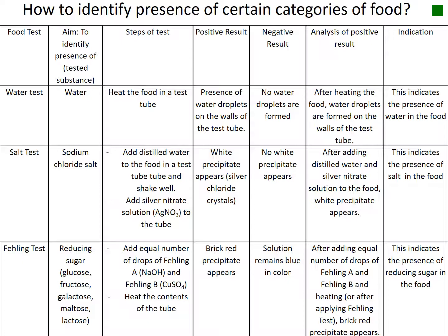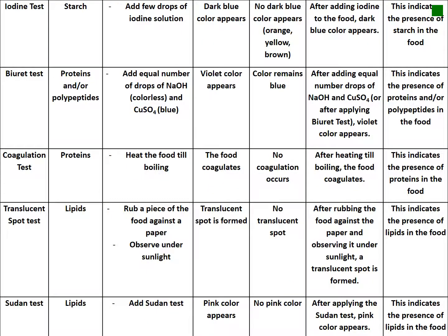For the salt test, add silver nitrate (AgNO₃); a white precipitate means salt is present, no white precipitate is a negative result. The Fehling's test identifies reducing sugars — glucose, fructose, galactose, maltose, and lactose. Add equal amounts of Fehling's A and Fehling's B; a brick-red precipitate means reducing sugar is present, the solution remaining blue means it is absent. The iodine test identifies the presence of starch — add iodine solution; a dark blue color is a positive result.